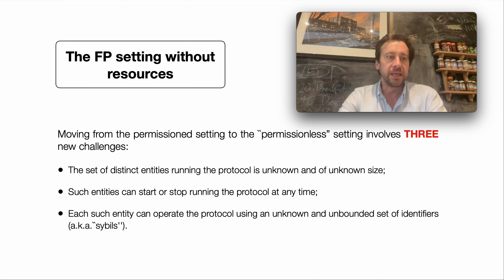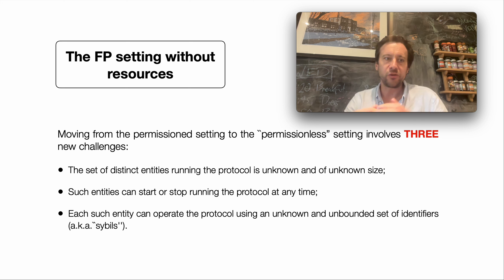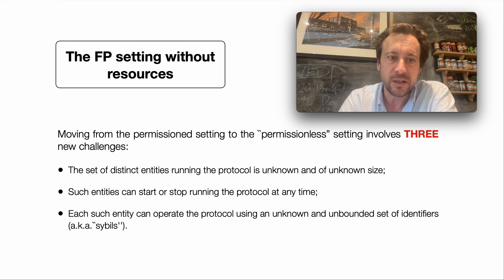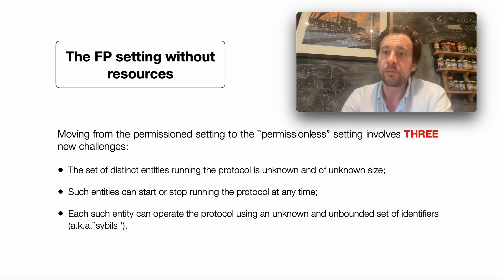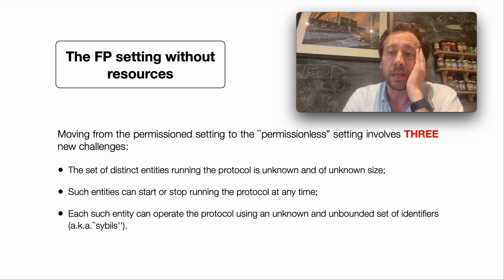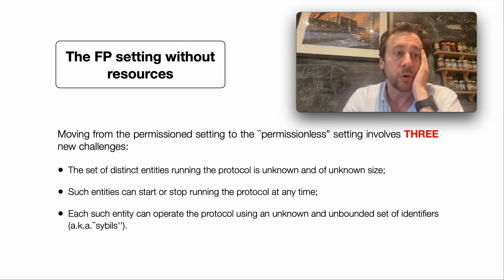We introduce these three new challenges simultaneously, which might seem like a slightly mad thing to do. Generally, theoretically speaking, if you want to develop the theory you introduce one new challenge at a time — you introduce one new challenge, see what that changes, then introduce a second new challenge and so on. The reason we introduce three new challenges simultaneously now is that we have a change in motivation: whereas previously in the permissioned setting the aim was fault tolerance, now our aim is decentralization, and dealing with decentralization requires us to consider these three new challenges at once.